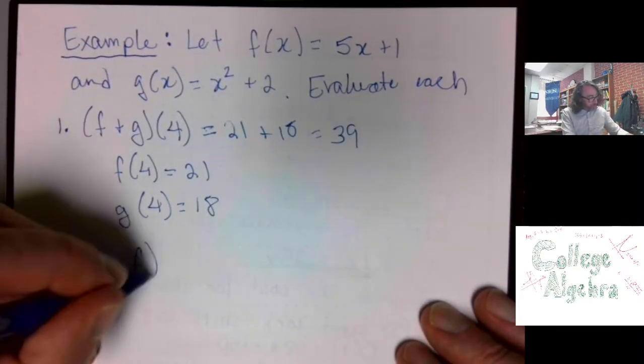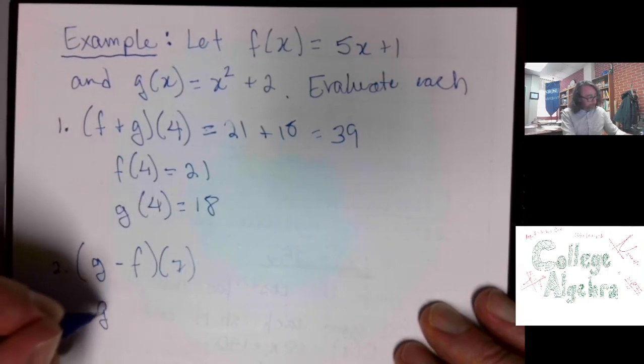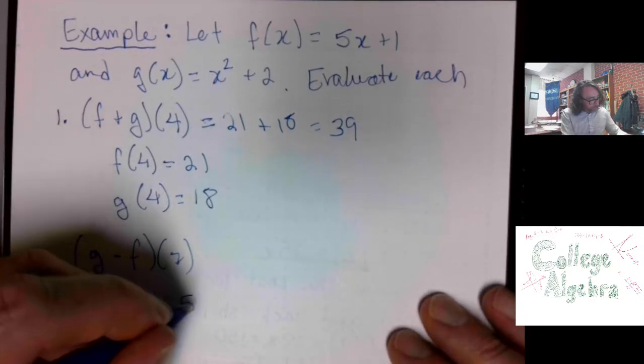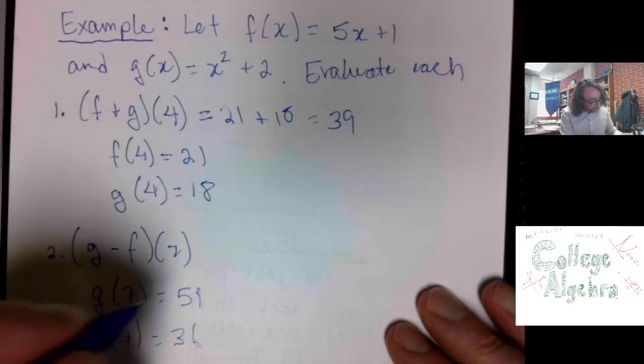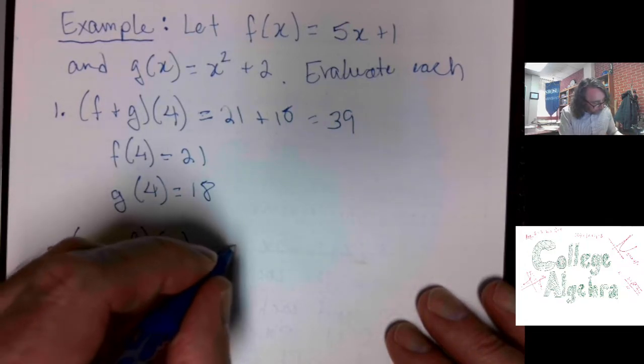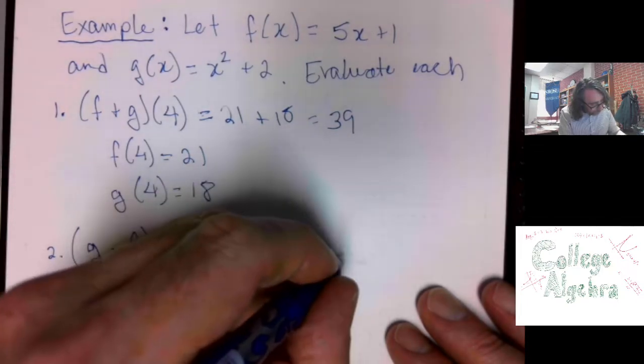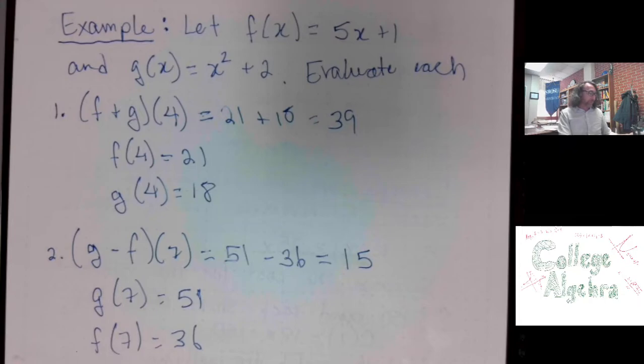Let's do g minus f of 7. g of 7. I figure that out. 51. F of 7, 36. So, for this problem, 51 minus 36, I'm getting 15. Check on my calculator. I was right. Great. 15.